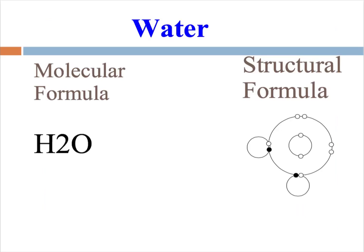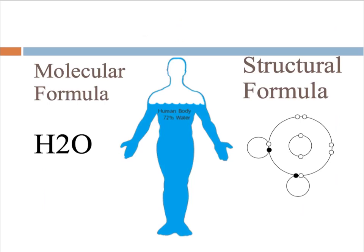They are held together by sharing electrons in a covalent bond, as you can see in the structural formula that is to the right. Water's structure gives it special properties which make it uniquely suited for living things. In fact, the human body is 72% water.